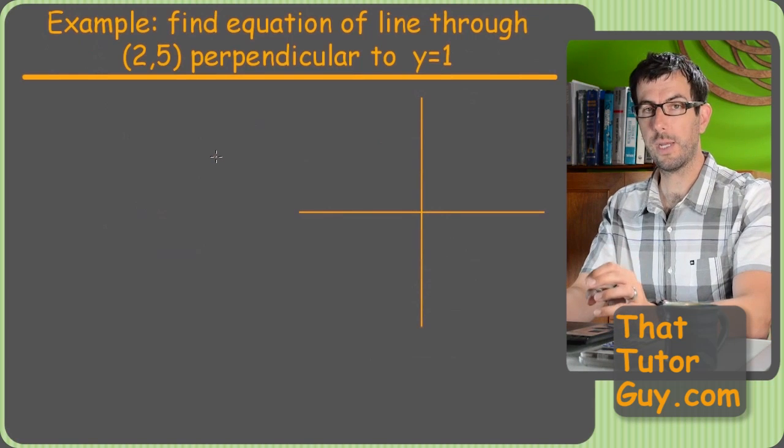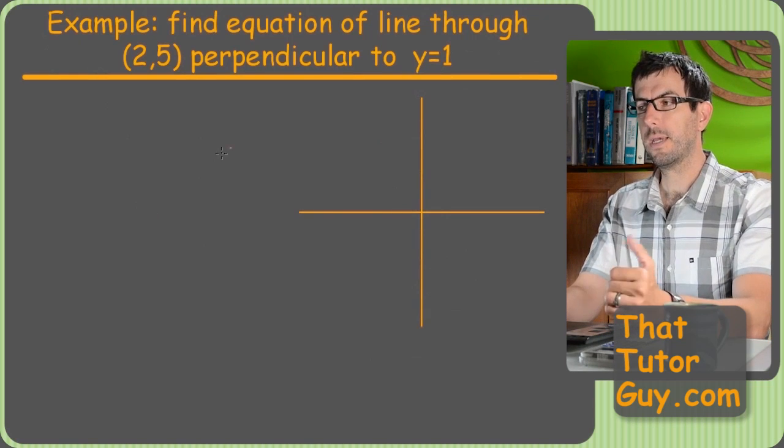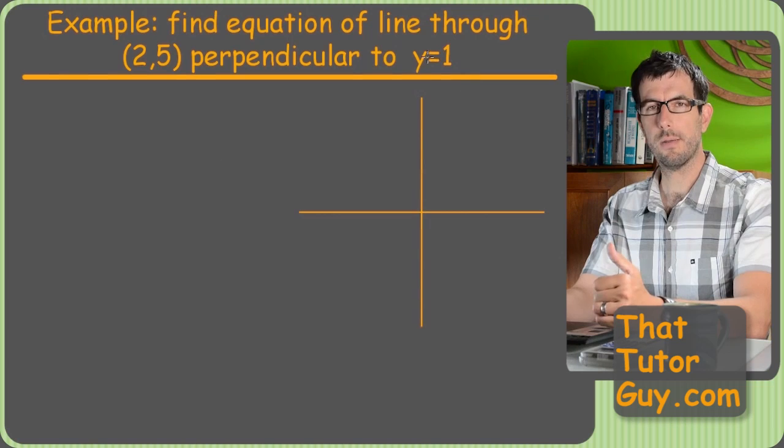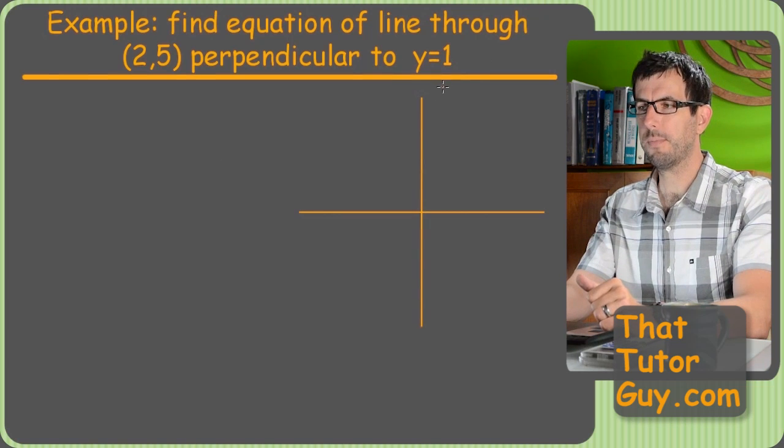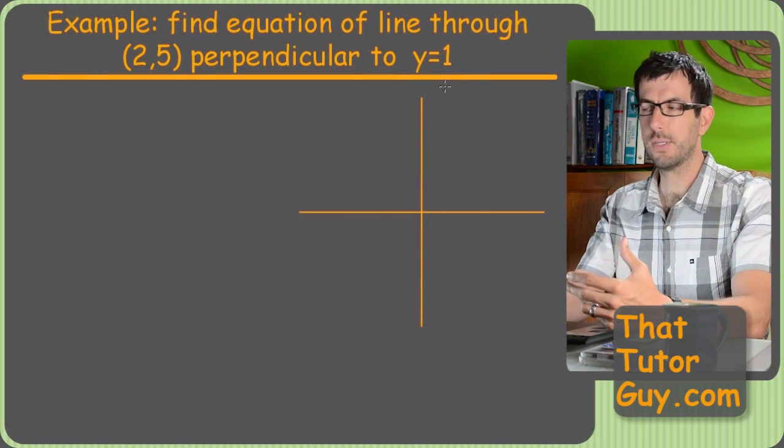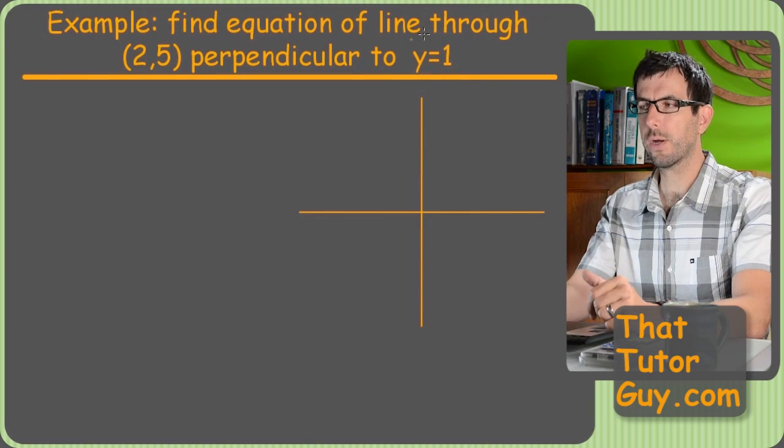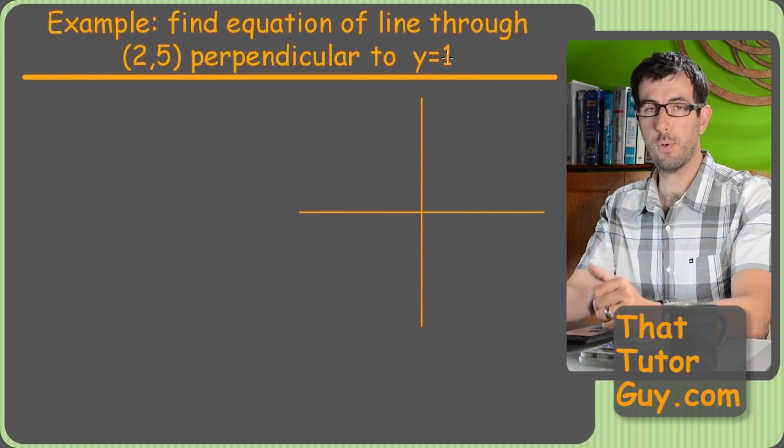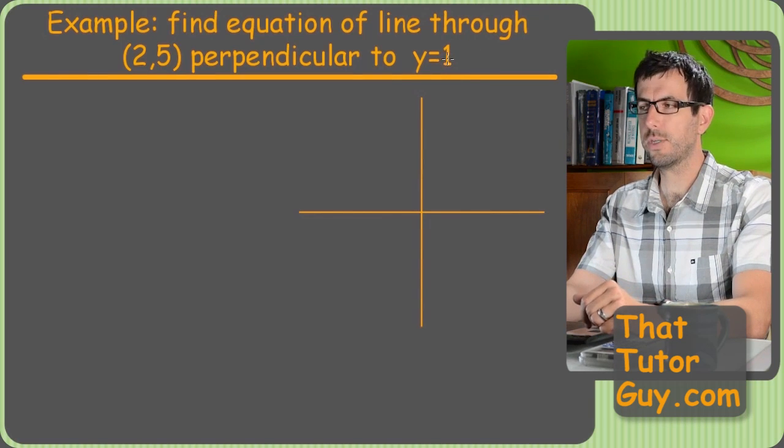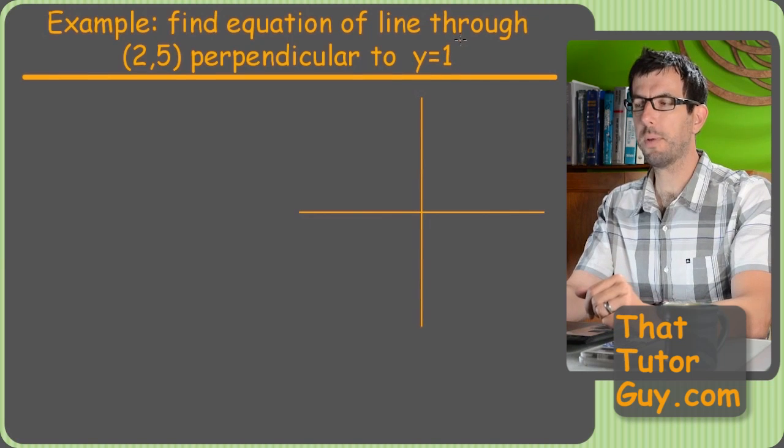All right. Final two problems will be slightly trickier because the original problem is a little bit weird. What is the slope of this problem? Now, when I tutor kids in person, this is what always happens. If we get a weird line, like where one of the letters is missing, the question is, uh-oh, I can't figure out the slope because there's no x.